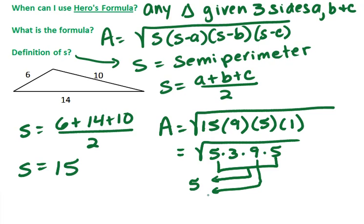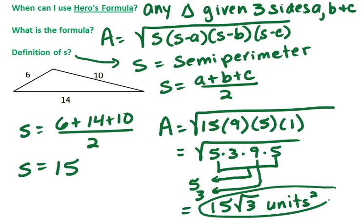9 is already a perfect square, so it brings out a 3. So don't make more work for yourself. The lonely factor of 3 is left under our radical. So there's our answer for the area of that triangle.